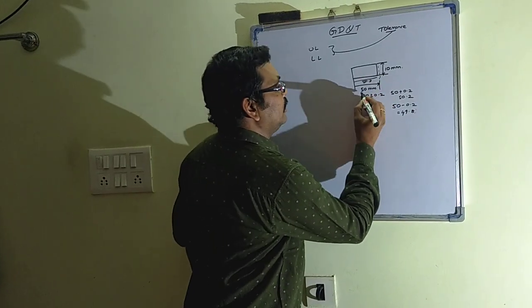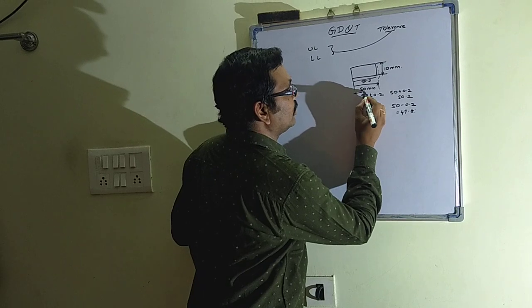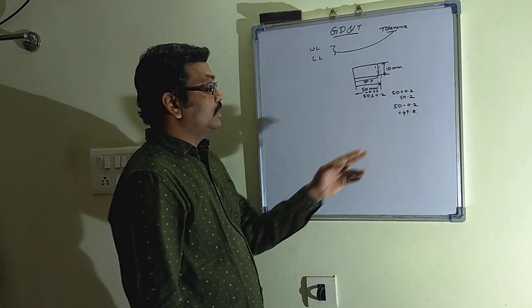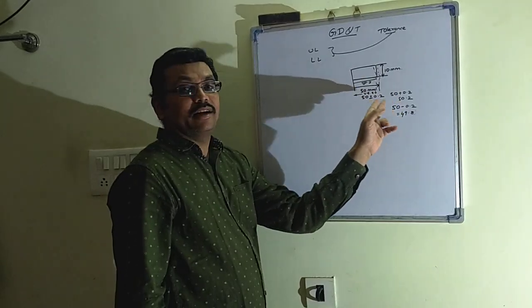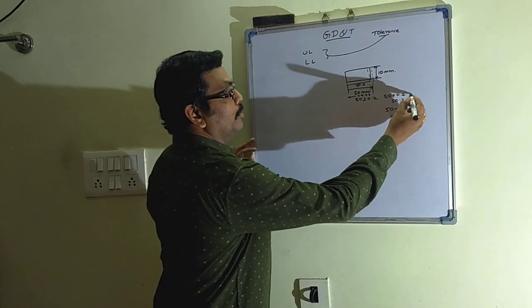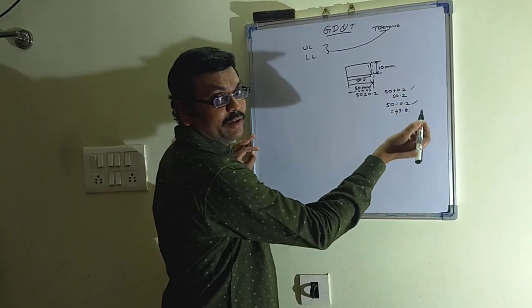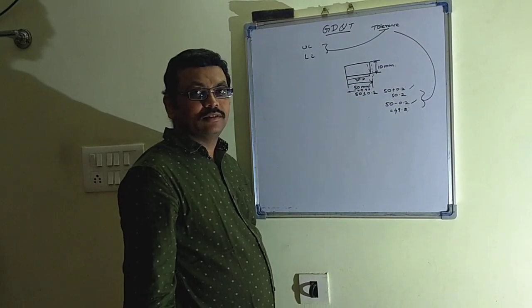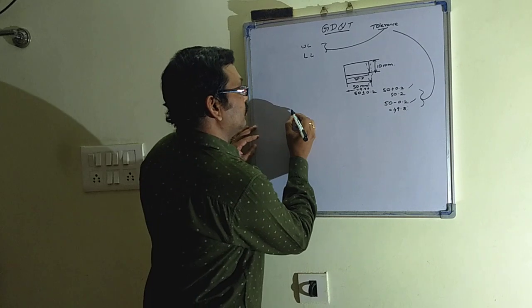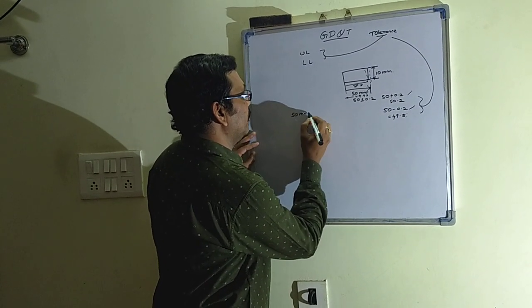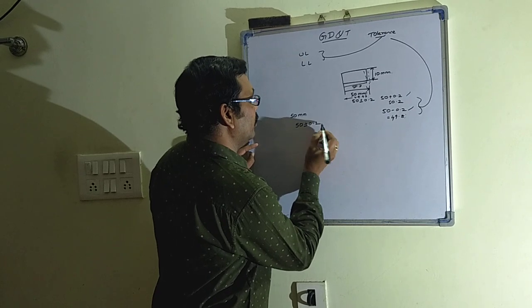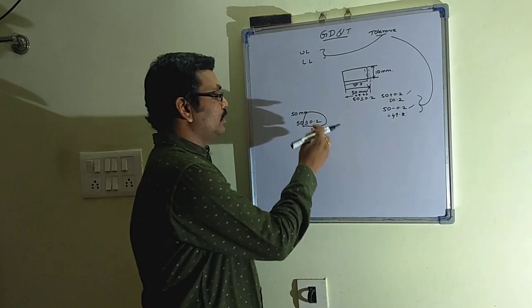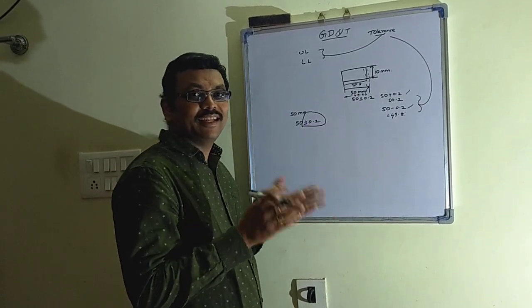So this 0.2 plus and minus 0.2 we call as upper limit and lower limit respectively. So these both we combine as a tolerance. So now we can say 50mm, 50 plus or minus 0.2. This is called as a tolerance zone. Without this tolerance we can't manufacture exactly.